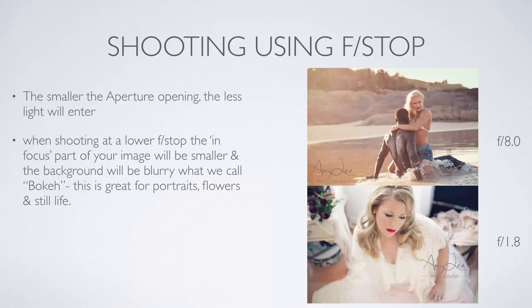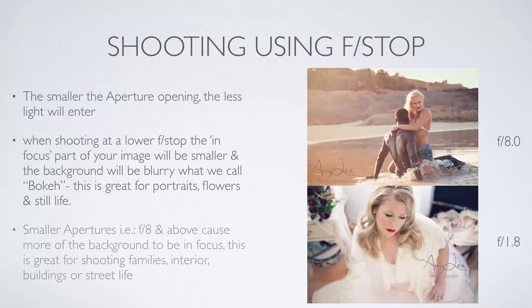I wanted everything else to be slightly blurred out and smoother than her face, because I was going for an old film noir Hollywood style. If I wanted more of the background in focus I'd go up to f8 outdoors on a sunny day. A small aperture of f8 and above will cause the background to be more in focus, which is great for shooting families, interior buildings, and street life.